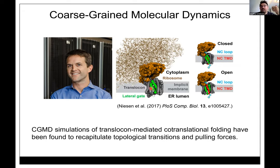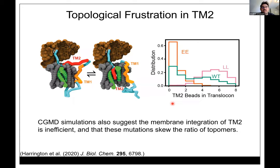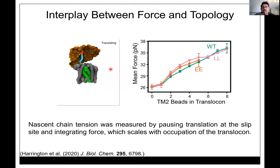Tom had already benchmarked this system for LEP proteins and various other proteins, showing it can recapitulate topology and replicate force profiles from arrest peptide data. When we asked him to look at our system, he confirmed our semi-polar TM2 domain showed frustration: sometimes going down into the translocon, sometimes skipping out onto the membrane interface. The bimodal histogram shows it sometimes goes in, sometimes doesn't. Double leucine and double glutamate mutations shift this probability back and forth.